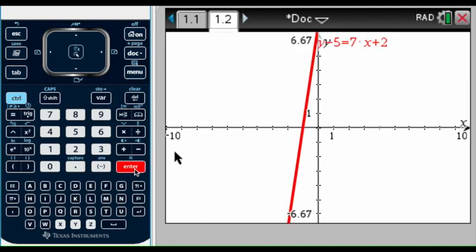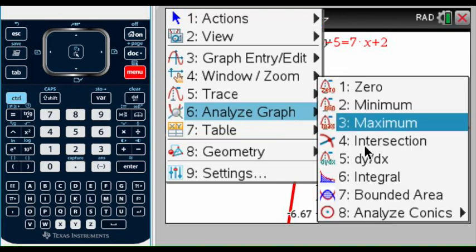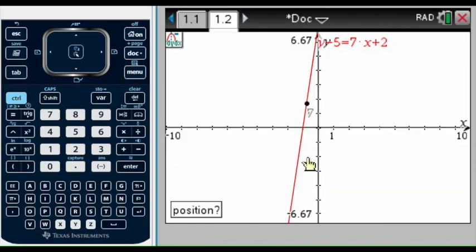There's my line and all that I have to do is menu, analyze graph, dy over dx which stands for change of y over change of x, and there it is, my slope is 7.